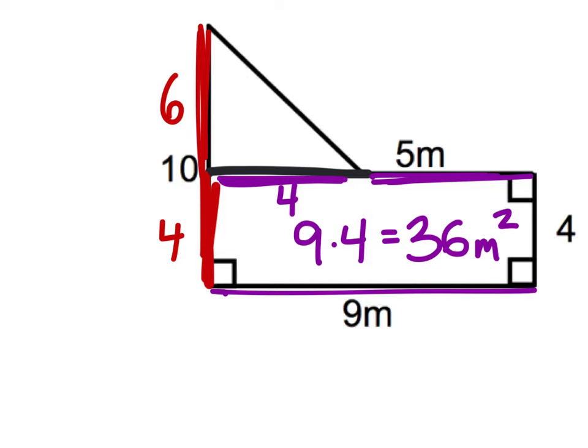And the area of the triangle, which is really just half of a rectangle, which would be a 6 by 4 rectangle but it's been cut in half, so we are going to cut it in half by dividing by 2, and that gives us 12 square meters.